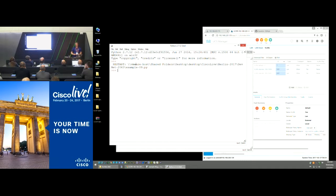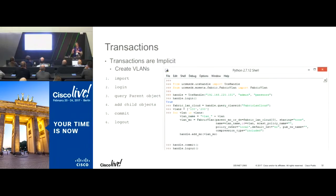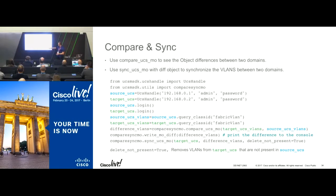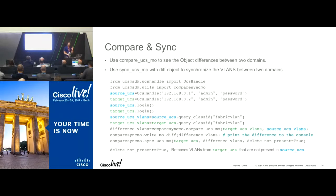We have two additional features in the Python SDK. First is compare and sync: I can log into a source UCS and a target UCS, query VLANs on both, see what the differences are, and push whatever's on my source to my target. I can also say: whatever's on my source, put it on my target, and if something on the target isn't on my source, get rid of it. This enables configuration management — make all your UCS systems look like the source.